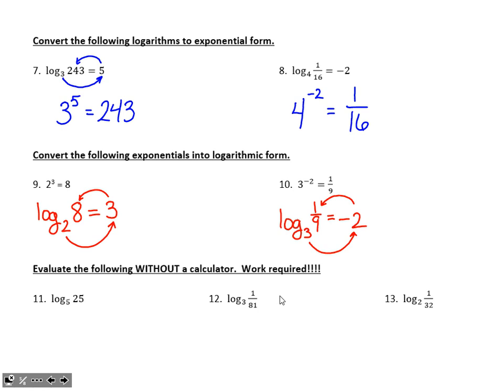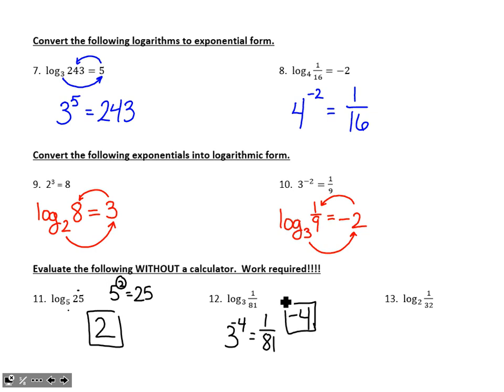Numbers 11, 12, and 13 ask us to evaluate without a calculator, and work is required. For number 11: the perfect exponent to turn 5 into 25 is 2 — show that 5 squared equals 25. For number 12: 3 to the fourth is 81, but we want one over 81, so we need 3 to the negative fourth — the answer is negative 4. For number 13: 2 to the fifth is 32, but we want one over 32, so we need a negative exponent — the perfect exponent is negative 5.